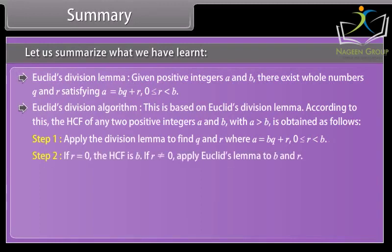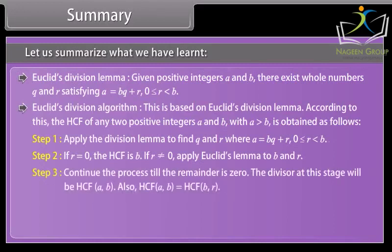Step 3: Continue the process till the remainder is 0. The divisor at this stage will be HCF(A,B). Also, HCF(A,B) equals HCF(B,R).